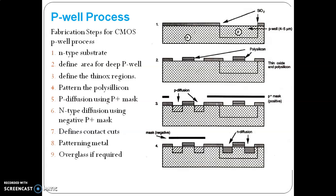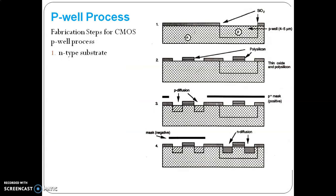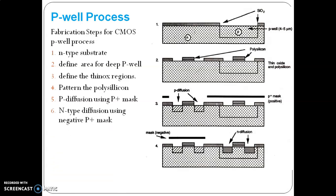So once again, the fabrication steps: first is N-type substrate, then define the P-well. Above the P-well define the thin oxide regions, then pattern the polysilicon to get the gate regions. Using chemical vapor deposition, do the P diffusions using P+ mask, then negative of the P+ mask for N diffusion. Then define the contact cuts, pattern the metal for getting the contact cuts, then overglass if required.